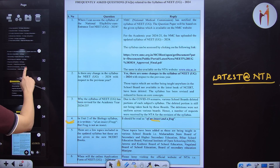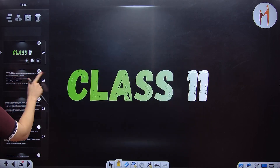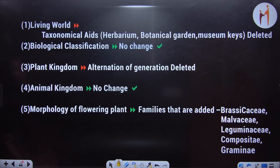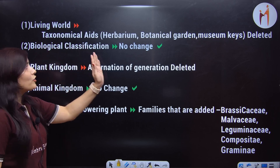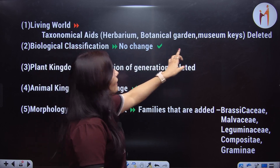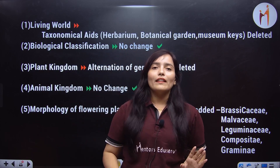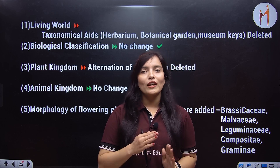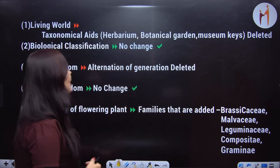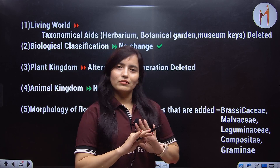Now I will talk about the syllabus in detail. In Class 11, the Living World's taxonomic aids have been deleted — herbarium, botanical garden, museum — these are deleted. We are talking about changes: what has been added and what has been deleted. So in the Living World, the taxonomic aids section has been deleted.